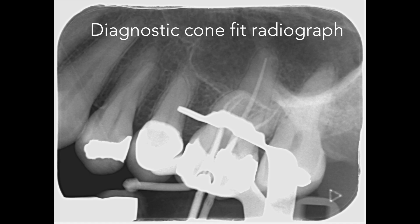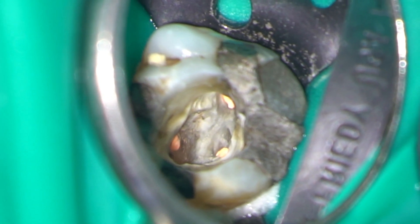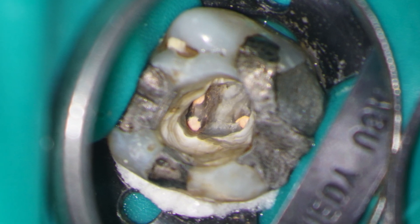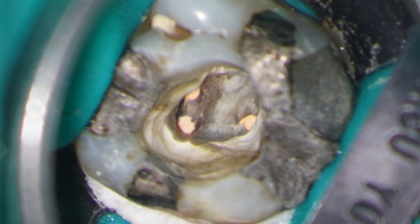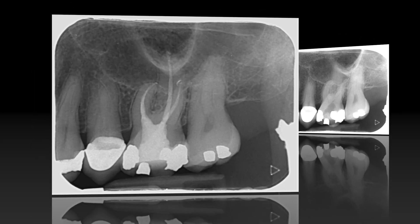Here you can see my diagnostic cone fit radiograph with good lengths in all canals. Here's the completed obturation which was carried out using a vertically compacted gutta-percha technique. The MB1 and MB2 are clearly visible under high microscopic magnification. Here again is the preoperative radiograph with the dentine ledges over the orifices of the root canals, and now the postoperative result showing a good coronal apical seal.